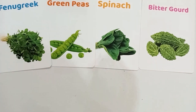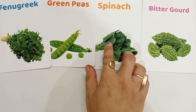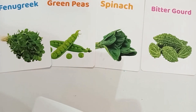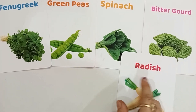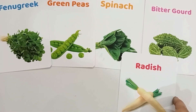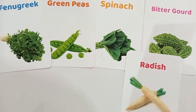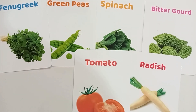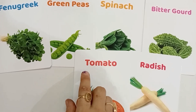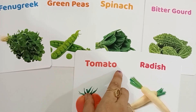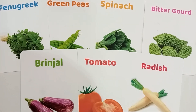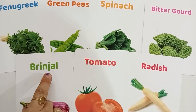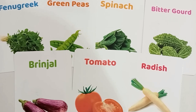B for Bitter Gourd, S for Spinach, G for Green Peas, F for Fenugreek. R for Radish, R-A-D-I-S-H, Radish. Radish is a vegetable. T for Tomato, T-O-M-A-T-O, Tomato. Tomato is also a vegetable. B for Brinjal, B-R-I-N-J-A-L, Brinjal. Brinjal is also a vegetable.